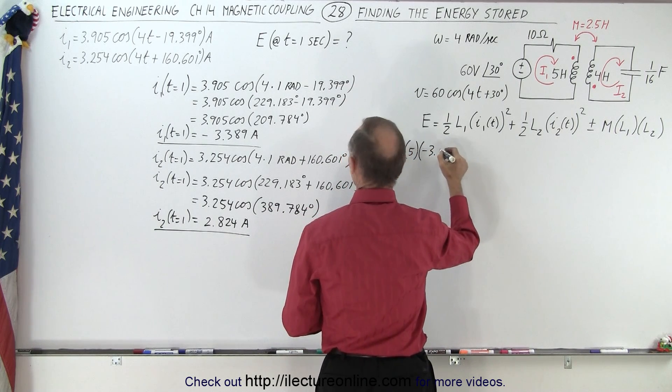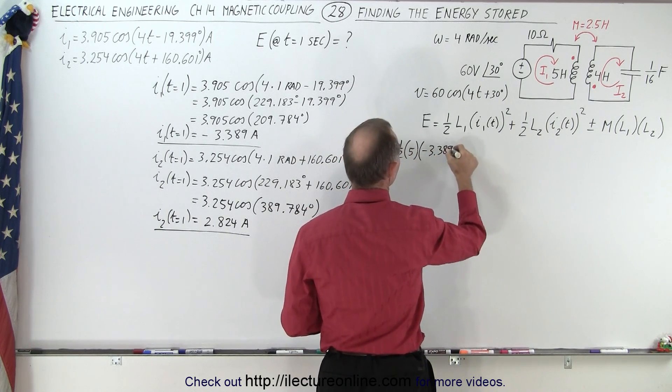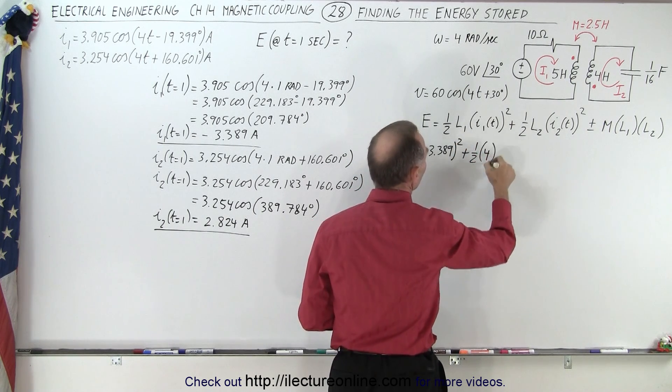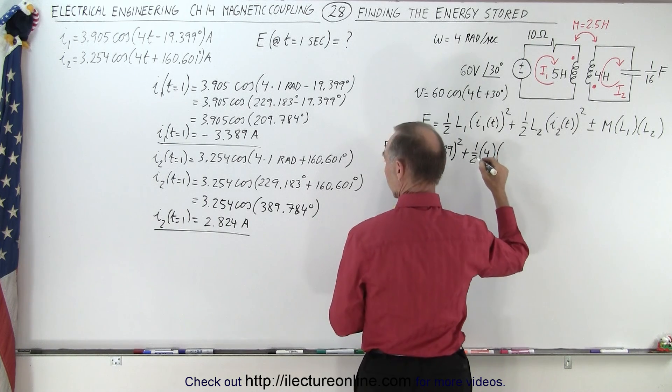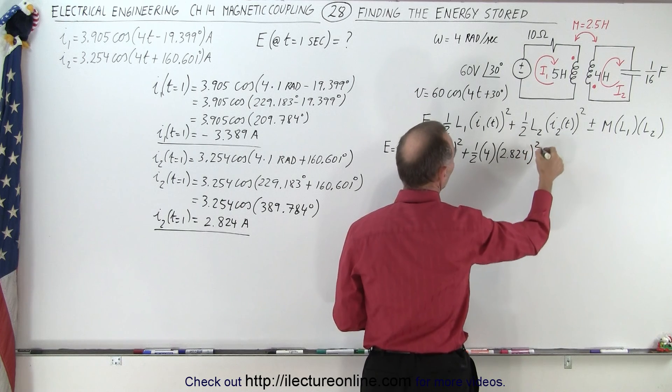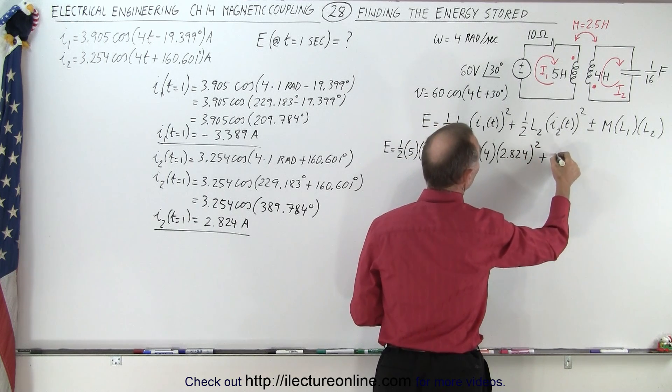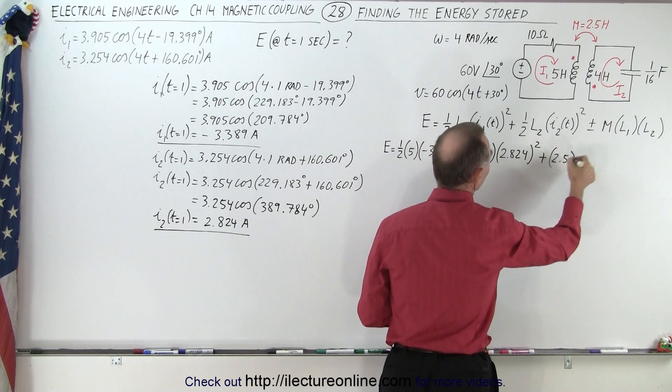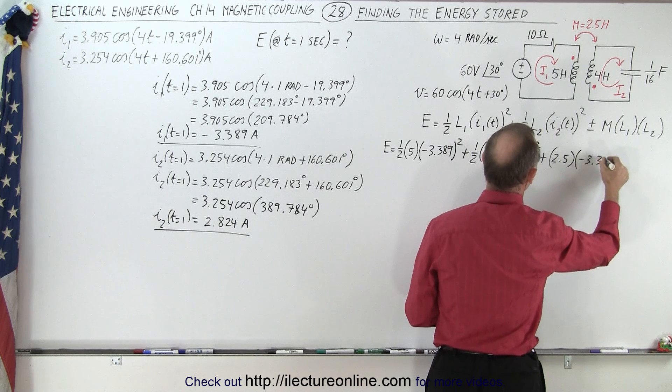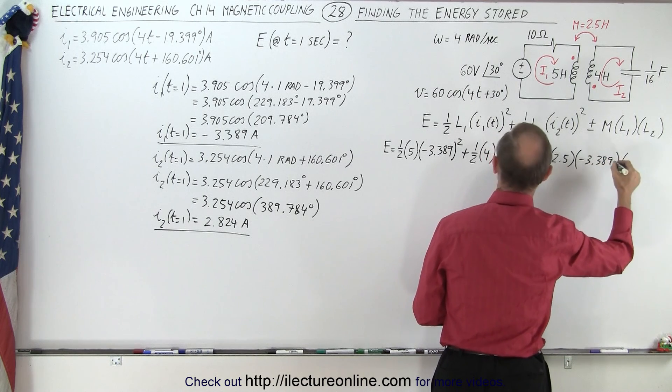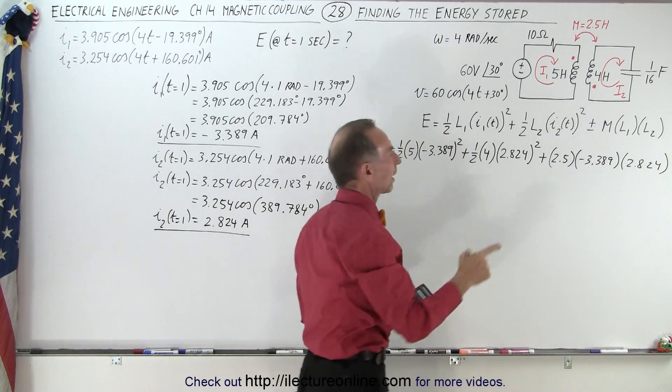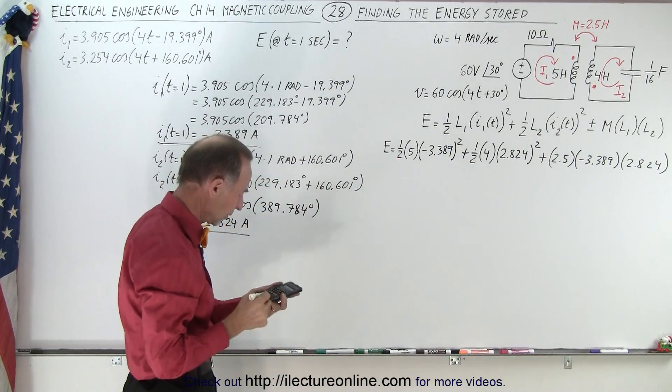We have negative 3.389 squared, plus 1.5 times L2, which is 4 henries, times the current, which is 2.824 quantity squared. This would be plus the mutual coupling 2.5 times I1, which is minus 3.389, and I2, which is a positive 2.824. Notice that third term will now become a negative value.